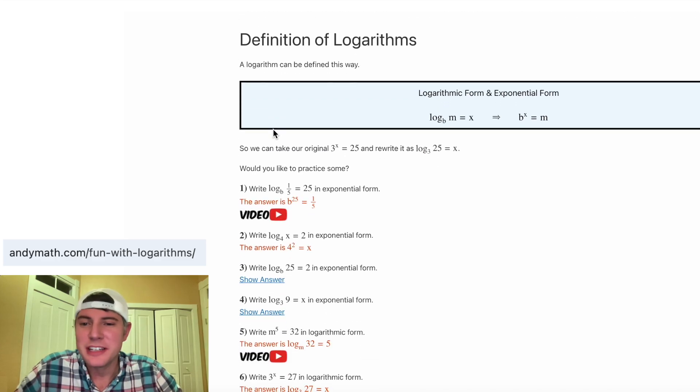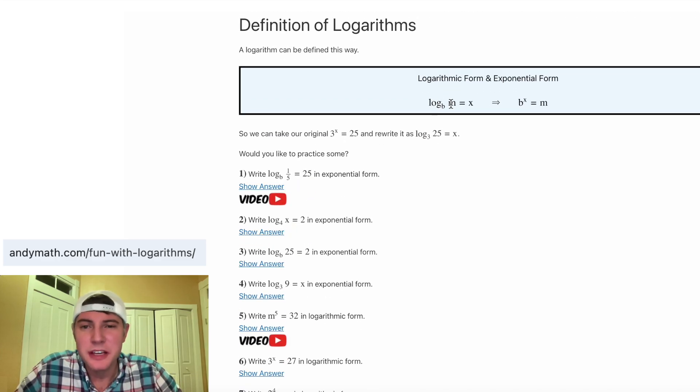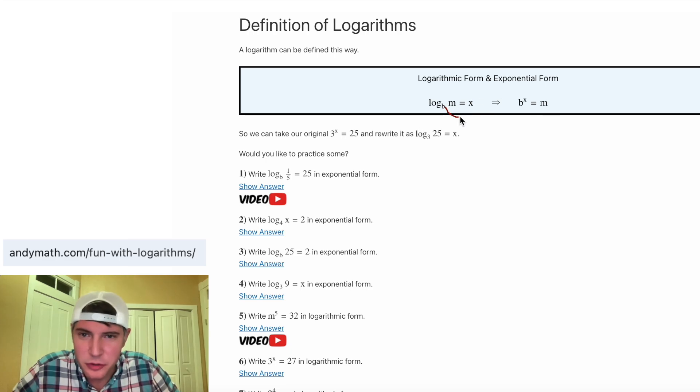So next we can go over the definition of logarithms. You have log base b of m equals x means the same thing as b to the x equals m. So the base of the log is equal to the base of the exponent. And then the exponent of this one is what the log is equal to.